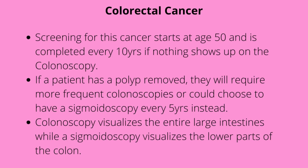Screening for colorectal cancer starts at the age of 50 and it's completed every 10 years. If nothing shows up initially on the colonoscopy, they keep it at 10 years. But if the patient has a polyp removal, they're required to have more frequent colonoscopies, or they could choose to have a sigmoidoscopy every five years instead. So technically, if you get a polyp removal, you're at high risk, so we're going to monitor you more frequently.